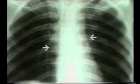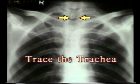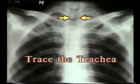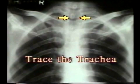Then study the hila, represented by the shadows of the hilar vessels. The left hilum is normally at a slightly higher level than the right. Lastly, identify the course of the trachea up to the carina for any deviation. This completes the inspection of the lung fields.